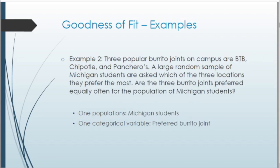For the burrito example, a large random sample of Michigan students are asked which of the three locations they prefer. Again, we're looking at one population of Michigan students and one categorical variable — whatever their preferred burrito joint is, whether BTB, Chipotle, or Pancheros. We want to see if that matches our null distribution of equal preference.